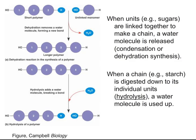For example, when sugar units are linked together to make a chain, a water molecule is released at each junction point. This reaction is condensation or dehydration synthesis. When a starch molecule is digested down to its individual units in the reactions called hydrolysis, a water molecule is used up in the process.